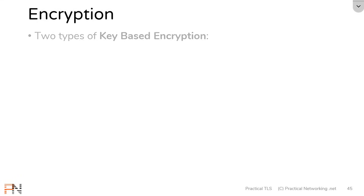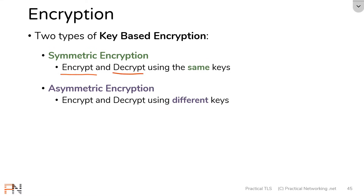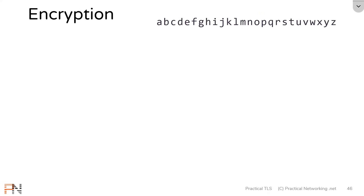There are two ways to do key-based encryption: symmetric encryption and asymmetric encryption, and we'll be talking about both for the rest of this lesson. The main difference is that symmetric encryption encrypts and decrypts content using the same keys, and asymmetric encryption encrypts and decrypts using different keys. To show how this works, we're going to use the alphabet — assuming only lowercase a through z, no uppercase characters, no numbers, no symbols. We'll keep it simple for the explanation.